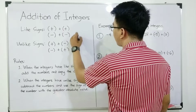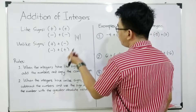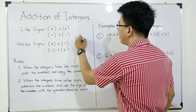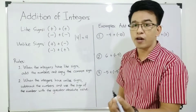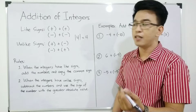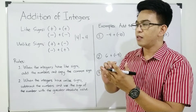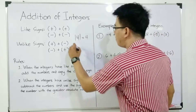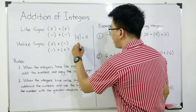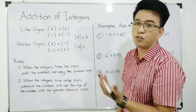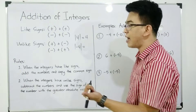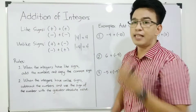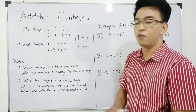Let's say, for example, the absolute value of four. When we try to find the absolute value of four, definitely the answer is four, because four is four units far from zero. Next, how about the absolute value of negative four? What is the absolute value of this? The absolute value is definitely four. Why? Because the distance of negative four from zero is equal to four.